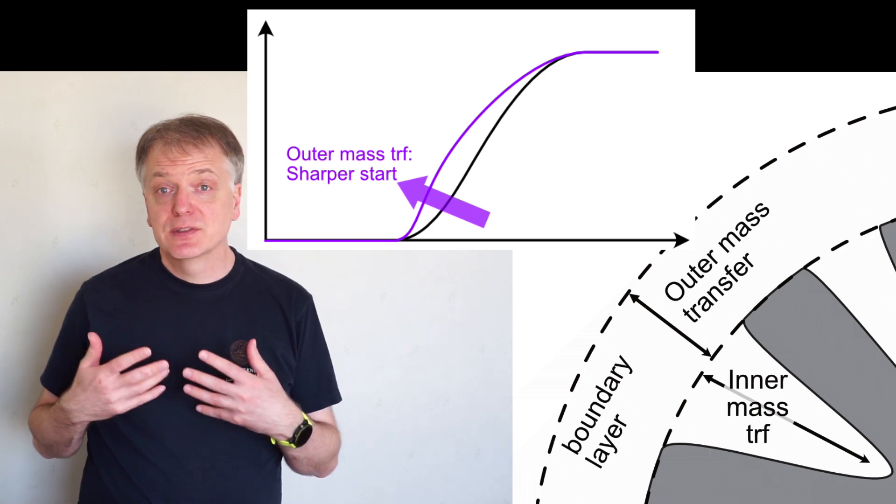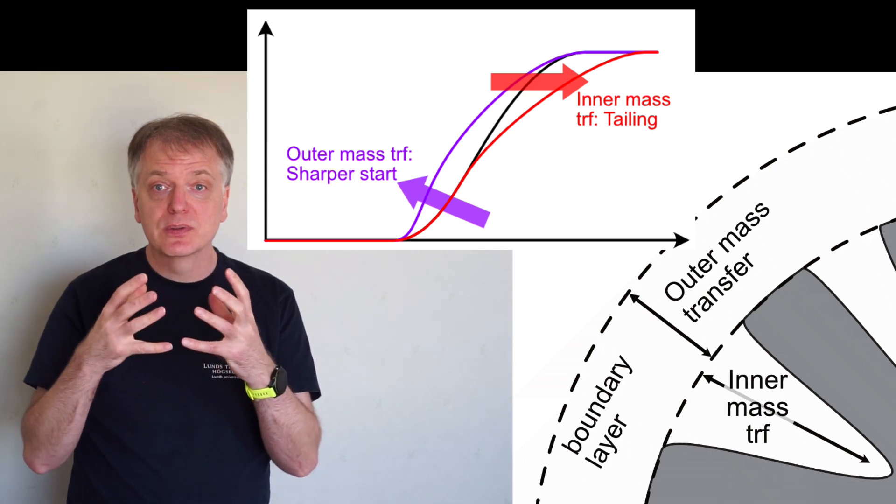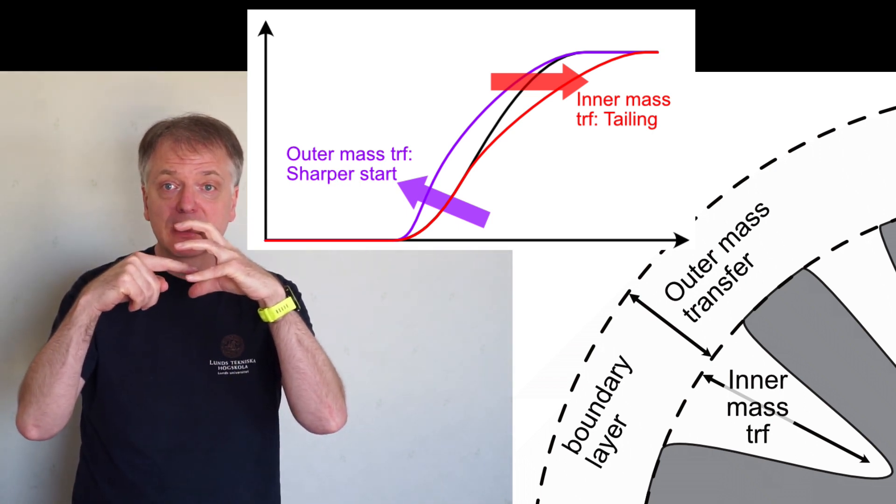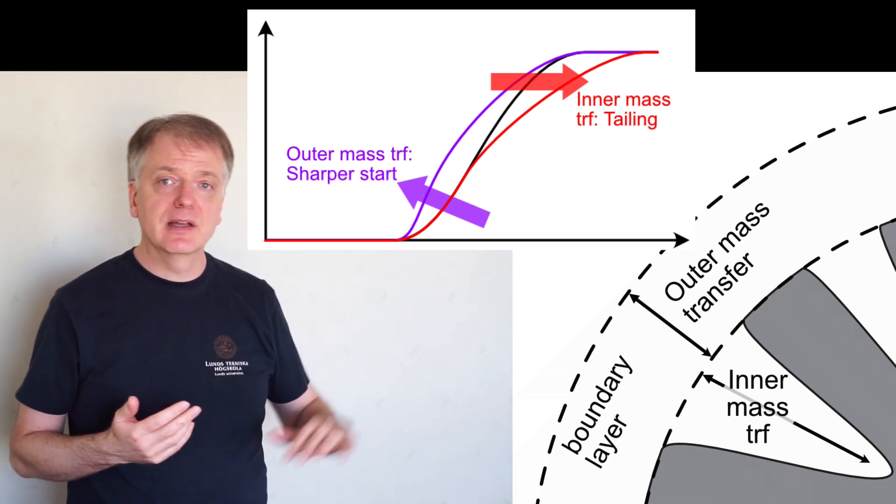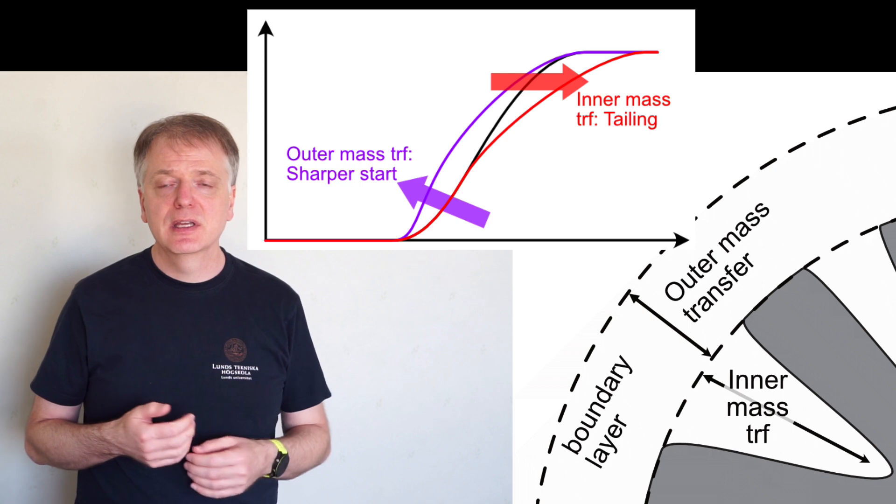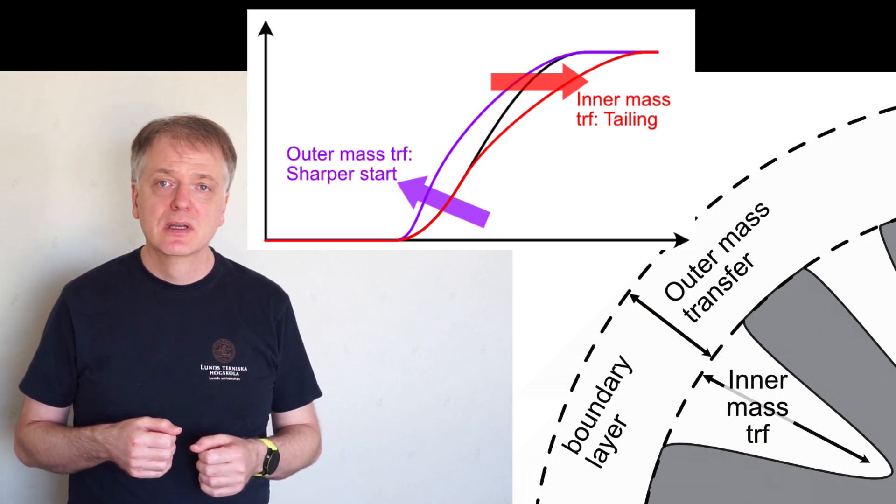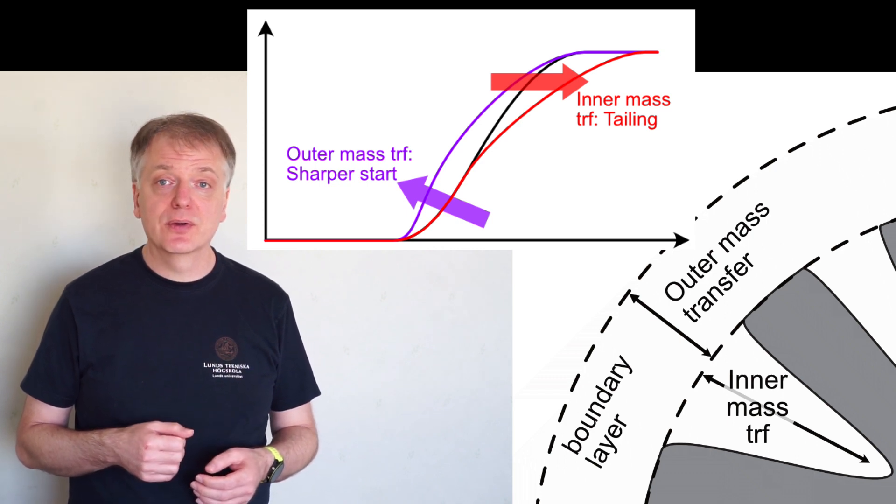If there is significant mass transfer resistance inside the particle due to molecules needing to diffuse far inside large particles, the breakthrough curve tails, which means that it takes a long time to reach the inlet concentration. Slow adsorption kinetics is another reason for tailing of the breakthrough curve.